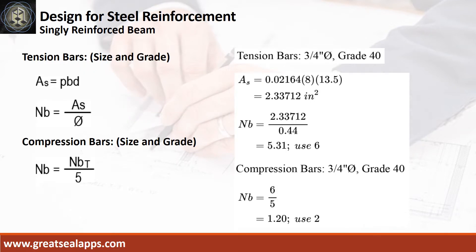Given ρ equals 0.02164, b equals 8 inches, and d equals 13.5 inches, the area of steel for tension bars is 2.33712 square inches, and the number of bars for 3/4 inch diameter is 6. The number of compression bars is 2.